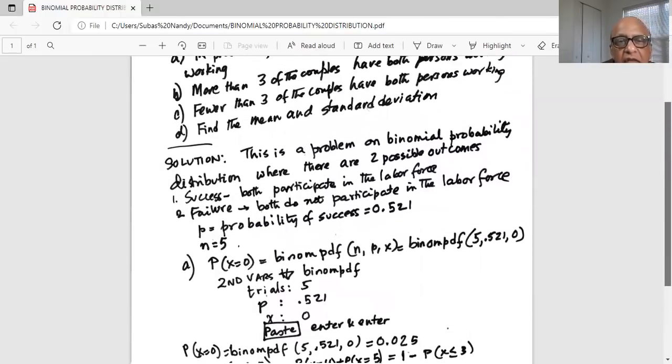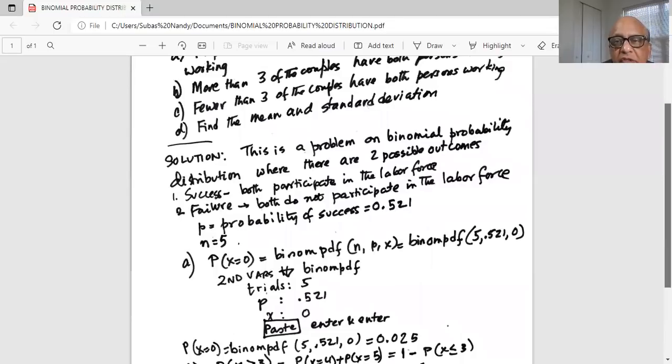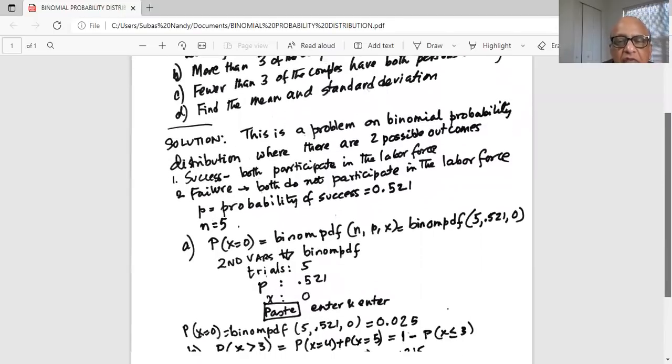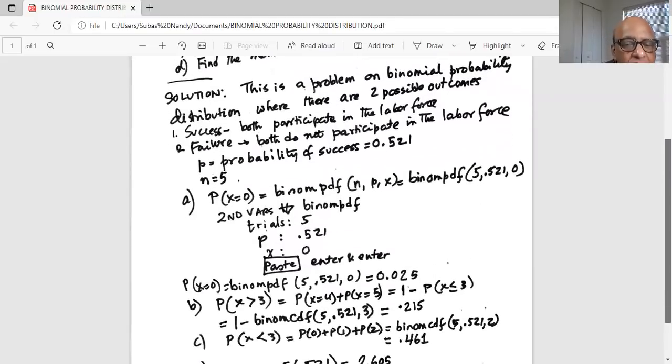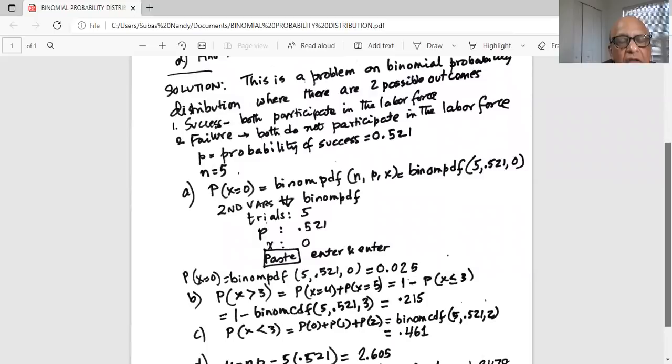Part c. Find fewer than three of the couples have both parties working. Fewer than three. What are the ones we are interested in fewer than three? Remember, x equals zero is also a possibility, x equals one and x equals two. We want to add these three probabilities.